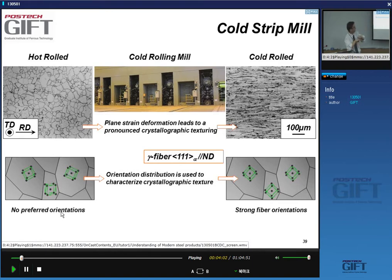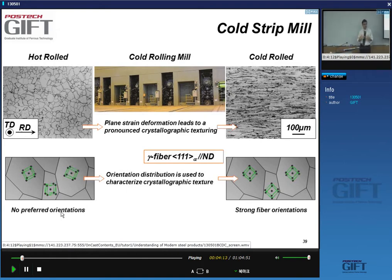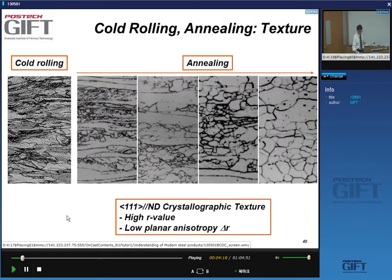As you did the rolling, you have influenced the texture of your material, and in particular you have created preferred orientations. So the first thing you do, with the exception of a very few steel products, is you anneal the material.